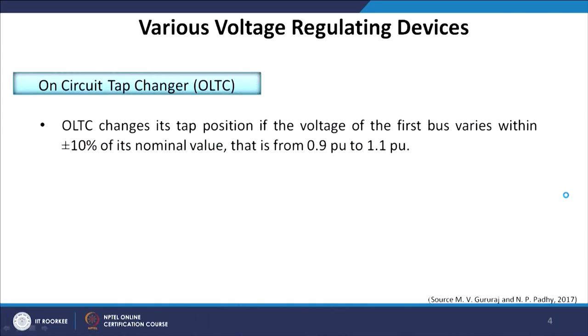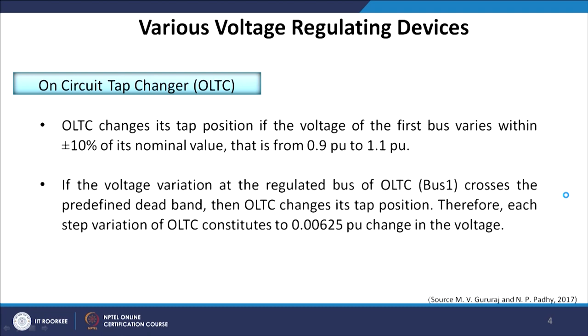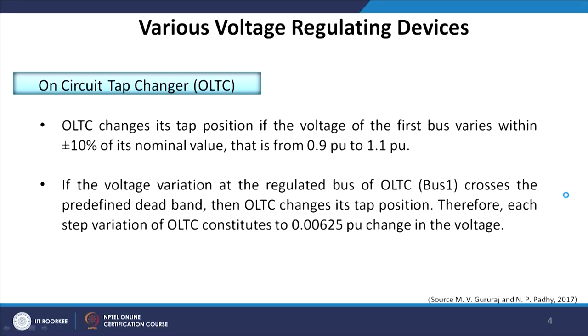Among voltage regulating devices, the very common one is the OLTC. The OLTC changes its tap position if the voltage of the first bus varies within plus or minus 10 percent of its nominal value — that is, if the voltage is varying between 0.9 and 1.1 per unit. If the voltage variation at the regulated bus of OLTC crosses this predefined dead band, the OLTC tries to change its tap positions.